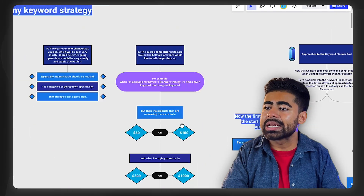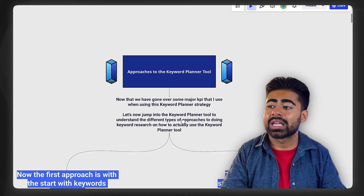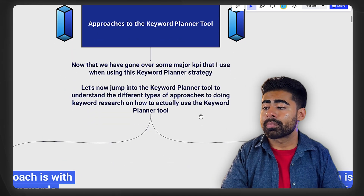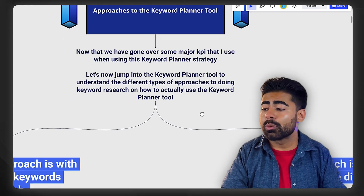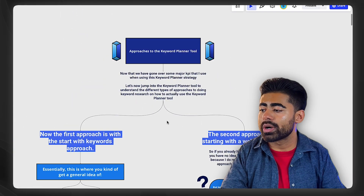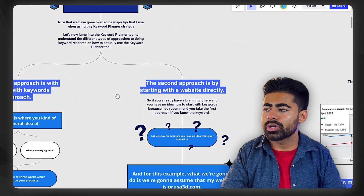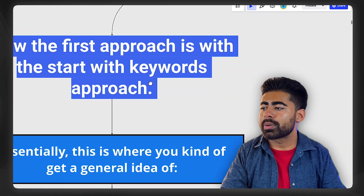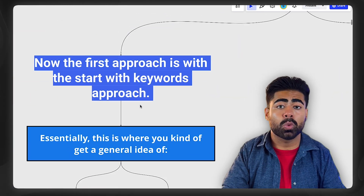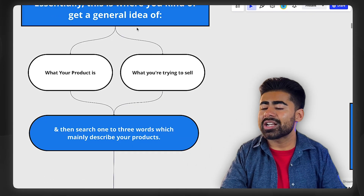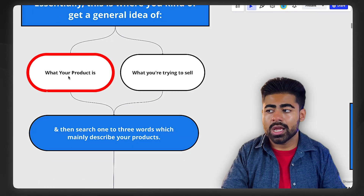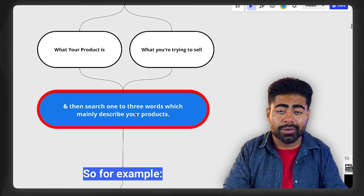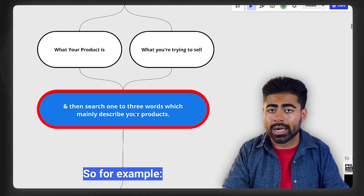But once you have these three things in mind, we can now approach the keyword planner tool itself and understand the different types of approaches to using it in 2024 and onwards. There are actually two different approaches I usually like to go with. The first approach is to start with the keywords approach, meaning you get a general idea of what your product is and what you're trying to sell, then search one to three major keywords within the keyword planner tool which describe your product.